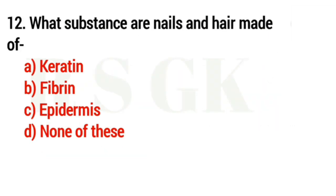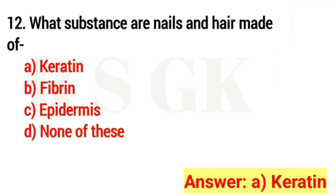Question number 12. What substance are nails and hair made of? Correct answer option C. Keratin.